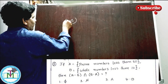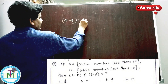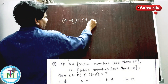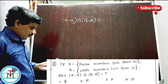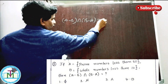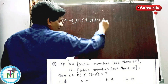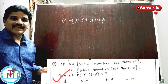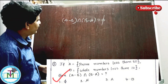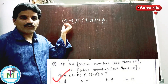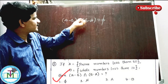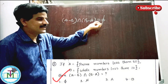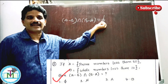Question number three: (A minus B) intersection (B minus A) is equal to how much? This is a standard formula. A minus B intersection B minus A is equal to empty set.